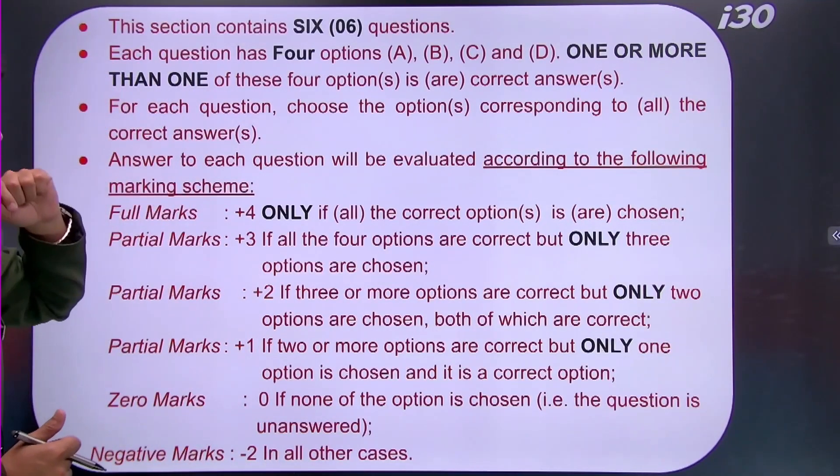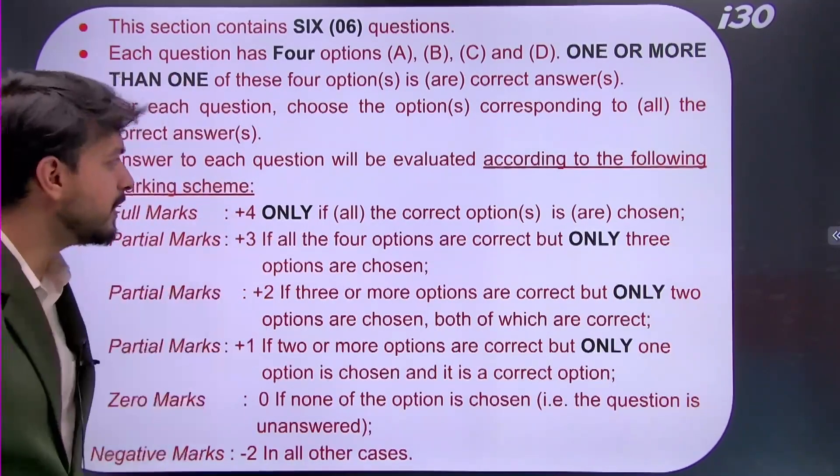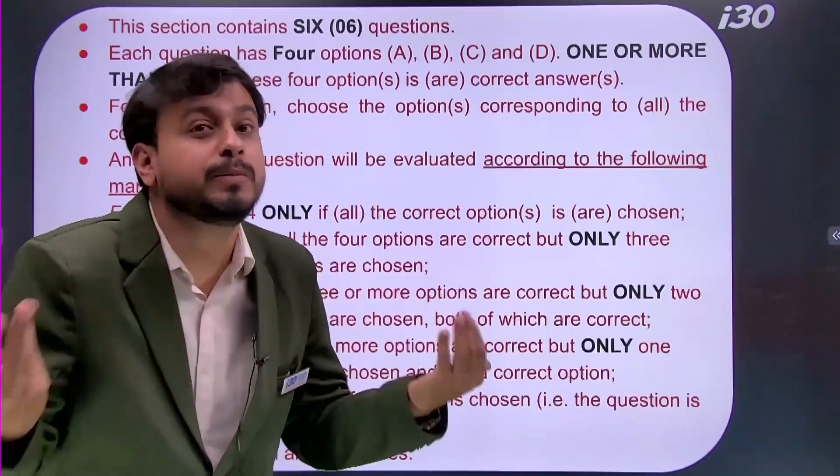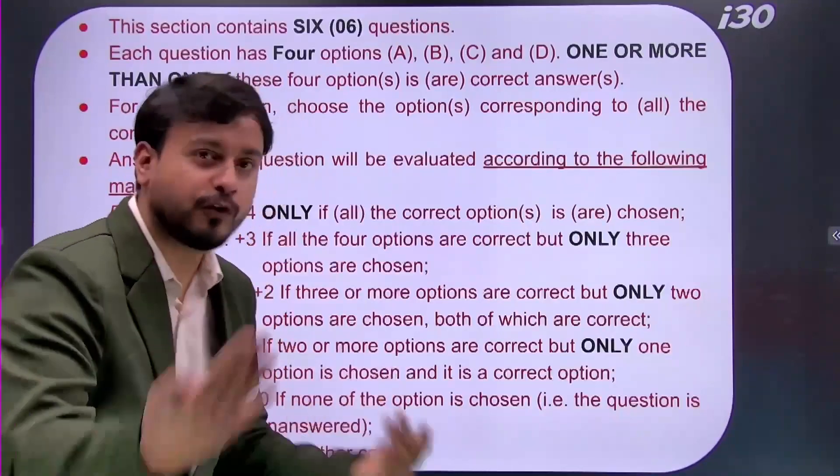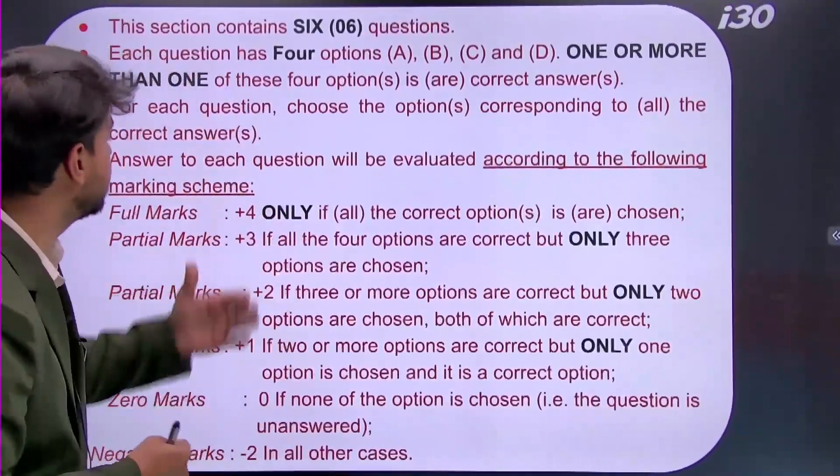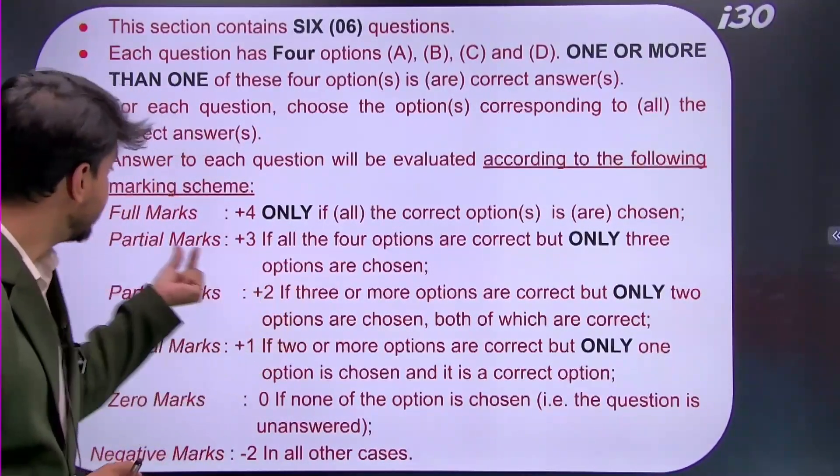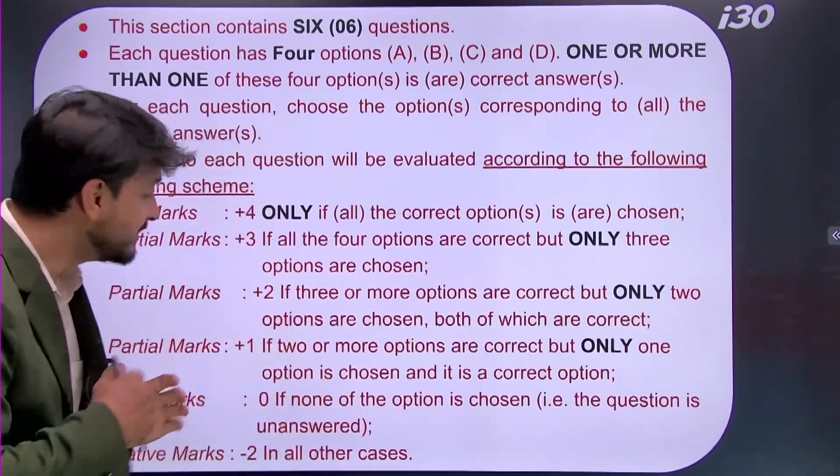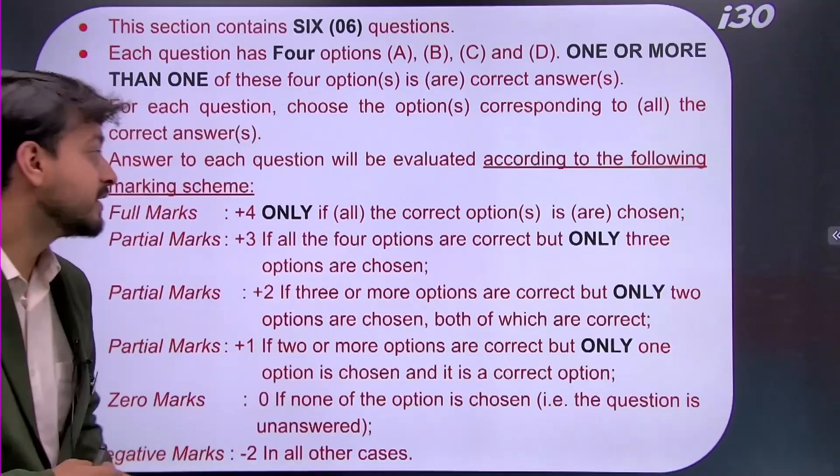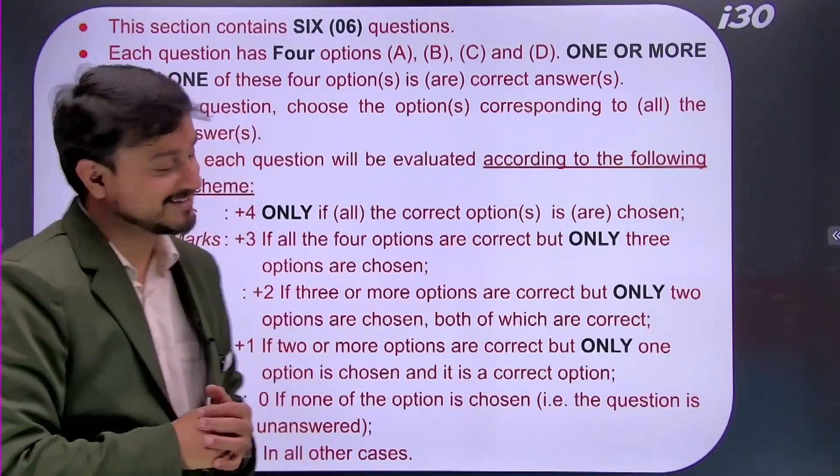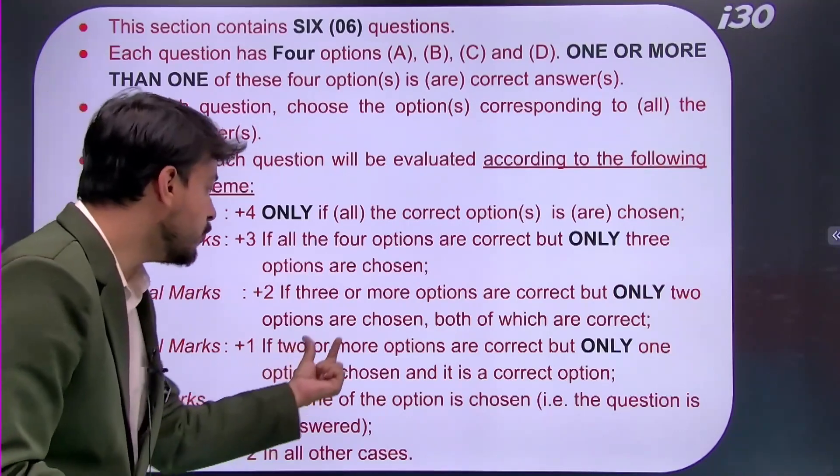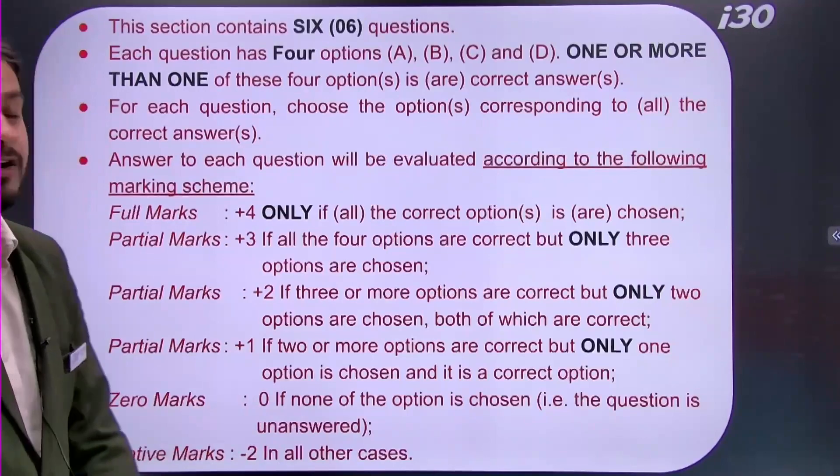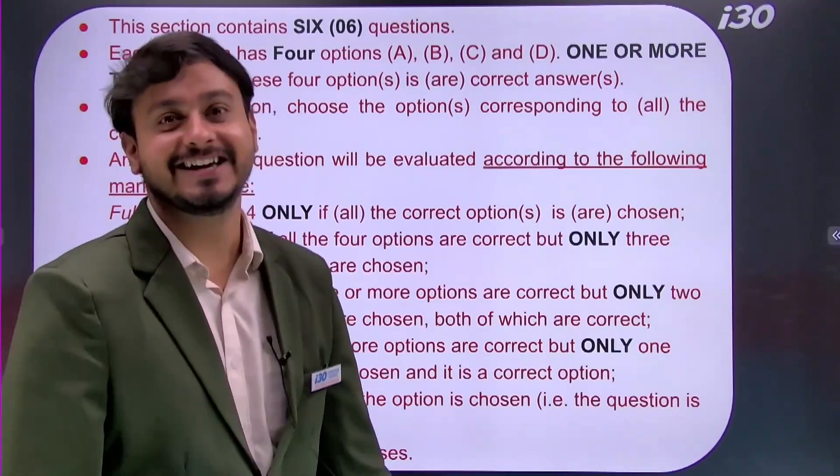Going forward, if you look into this pattern, here we will get +4 marks if all the correct options are chosen. If one or more is correct, because one or more is correct, so one option might also be correct sometimes. So if you hit that thing, you will get +4. And if all 4 are correct, you need to hit all 4 to get the total 4 marks in this particular question. Now, you will get +3, that is a partial marking in this pattern, if all 4 options are correct but only 3 options are chosen. You will get +2 if 3 or more options are correct but only 2 options are chosen which both are correct. And you will get +1 if 2 or more options are correct but only 1 option is chosen as the correct option. You will get 0 if you have not attempted this problem, and minus 2 in all other cases.